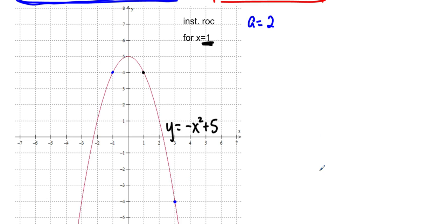Then maybe we'll try a smaller interval — let's say 0.5. So I'm going to go to 0.5 away from 1, which is 0.5, and then above it by 0.5, so around 1.5. So we're going to find the slopes of these two secants, and you can see we're going to be approaching the actual point.